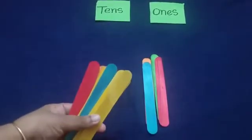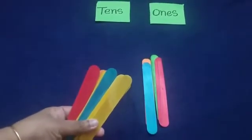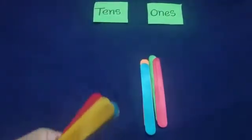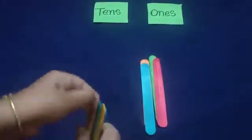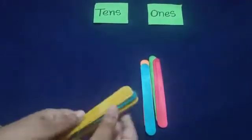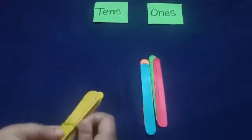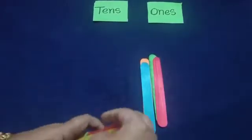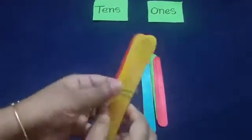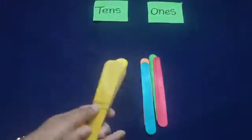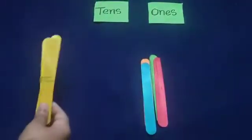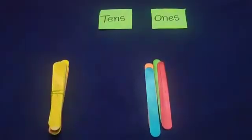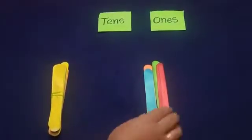This ten ice cream sticks make one bundle. So, what we are going to do? We are going to put a rubber band. This ten ice cream sticks make one bundle. I have taken this bundle and kept it here.